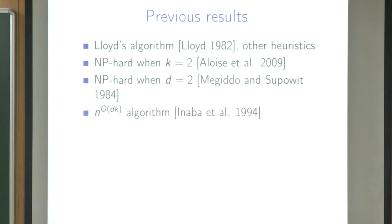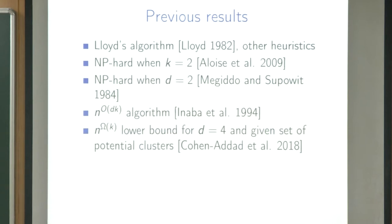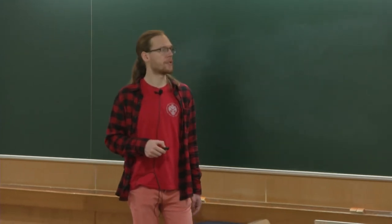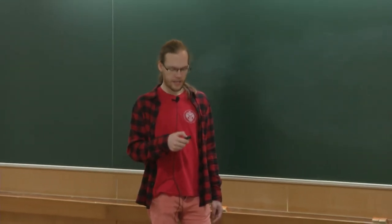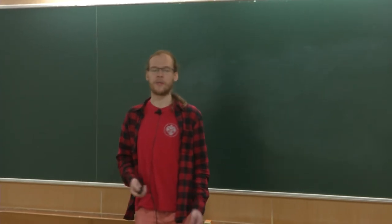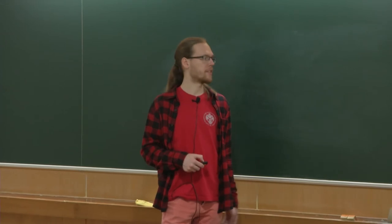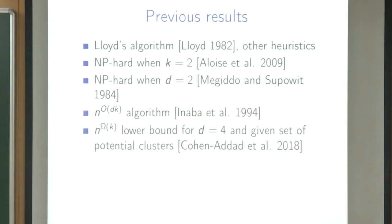This doesn't really look very good in terms of complexity — it's NP-hard here and NP-hard there, and we only have this algorithm. Moreover, there was also a lower bound: you cannot solve this problem faster than n^{Ω(k)} even for constant dimension — but this was for a variant where the cluster center must be one of the given input points, not an arbitrary point in R^d.